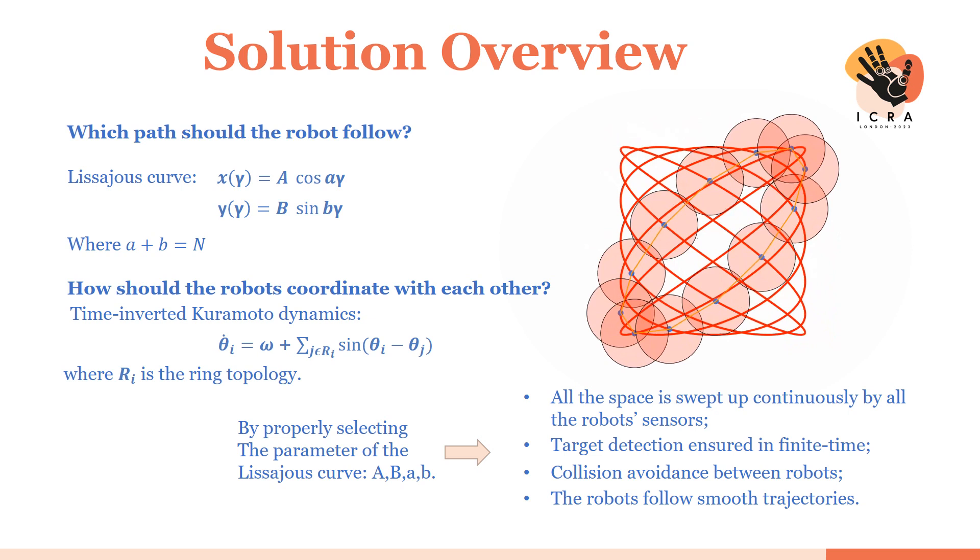We have that by properly selecting the parameters of the Lissajous Curve, all the space of interest is swept up continuously by all the robot's sensors, target detection is ensured in finite time, we have collision avoidance between robots, and the robots follow smooth trajectories as well.